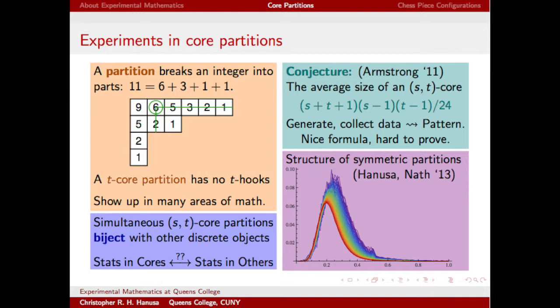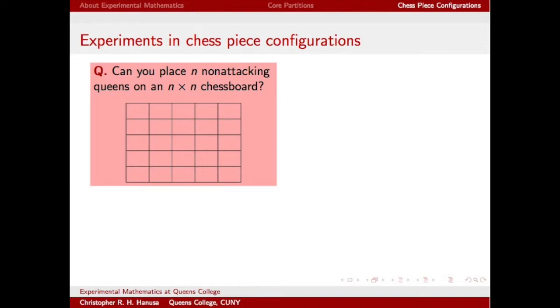Let's talk about one more topic that I've been thinking about using experimental methods. The question goes, can you place n queens on an n-by-n chessboard in such a way that no two queens attack each other? Remember that a queen can attack horizontally, vertically, and diagonally. Well, in this case, yes, it is possible.